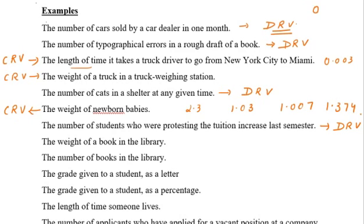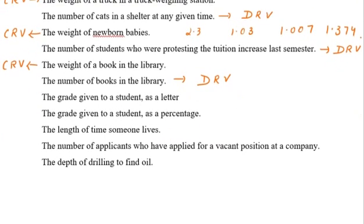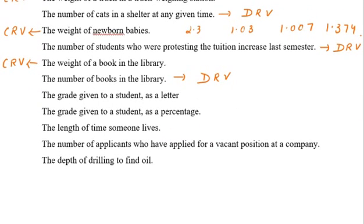Example 8: the weight of a book in a library — it could be anything, so it is a continuous random variable. Example 9: the number of books in the library — a discrete random variable. Example 10: the grade given to a student as a letter — A, A+, A++ and so on — this is a discrete random variable.